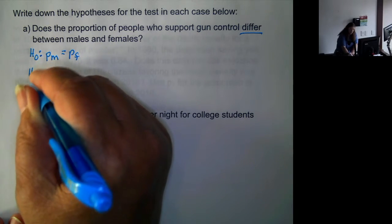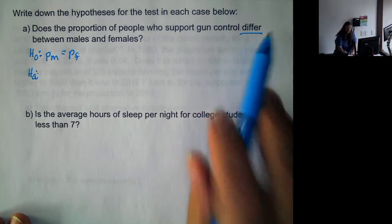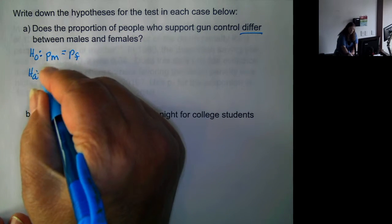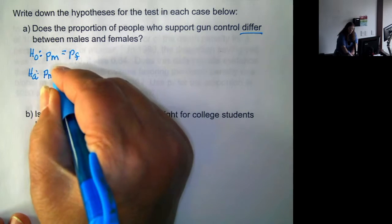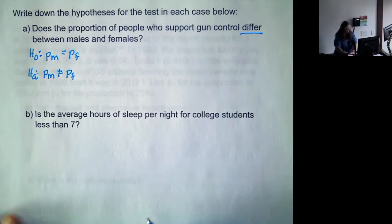The alternative, again, it's just a straight difference. It's not giving us a direction of the difference. So it'd be the proportion for males is not equal to the proportion for females.